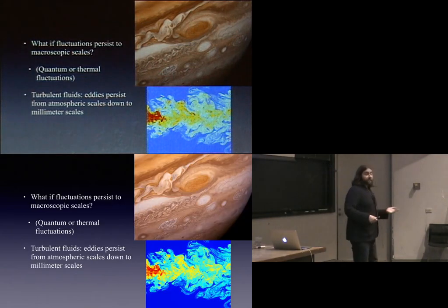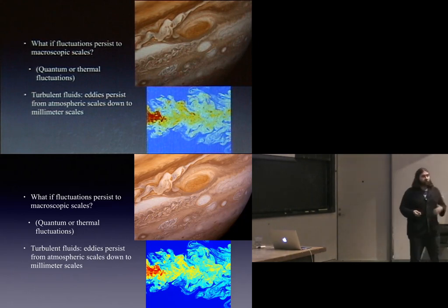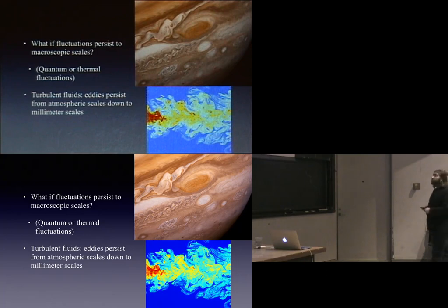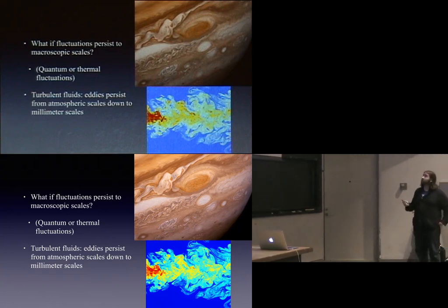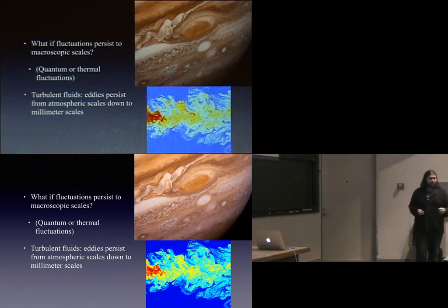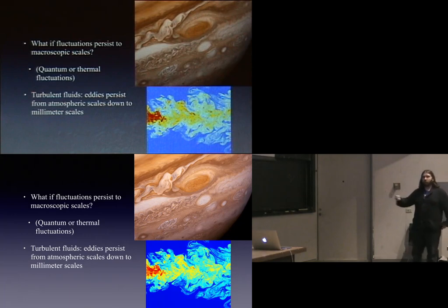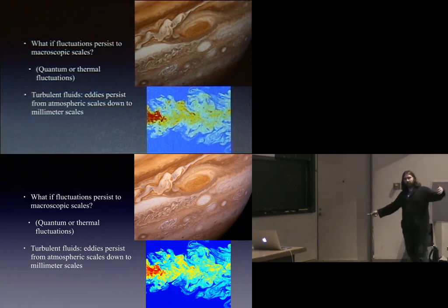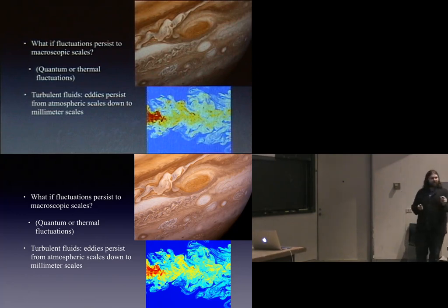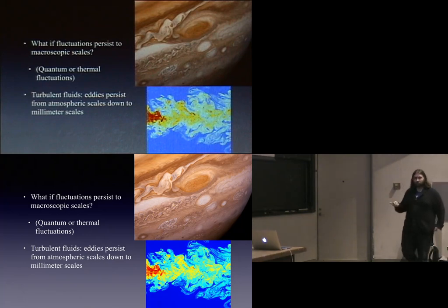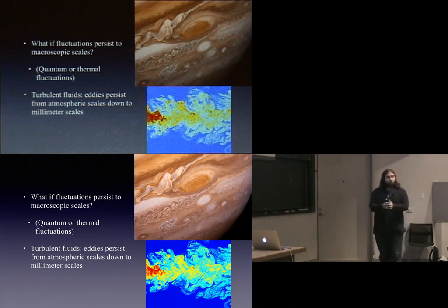But fluids aren't always that nice and clean. In particular, fluids can exhibit what's called turbulence. Here's a picture of the spot on Jupiter — this is precisely what turbulence is. There's also turbulence in the atmosphere. Turbulence is when you have eddies — little viscous spirals in the fluid — that persist not just at the atmospheric scale like clouds moving or the jet stream going around the globe, but if you zoom in on that fluid, those eddies persist all the way down to basically millimeter scales.